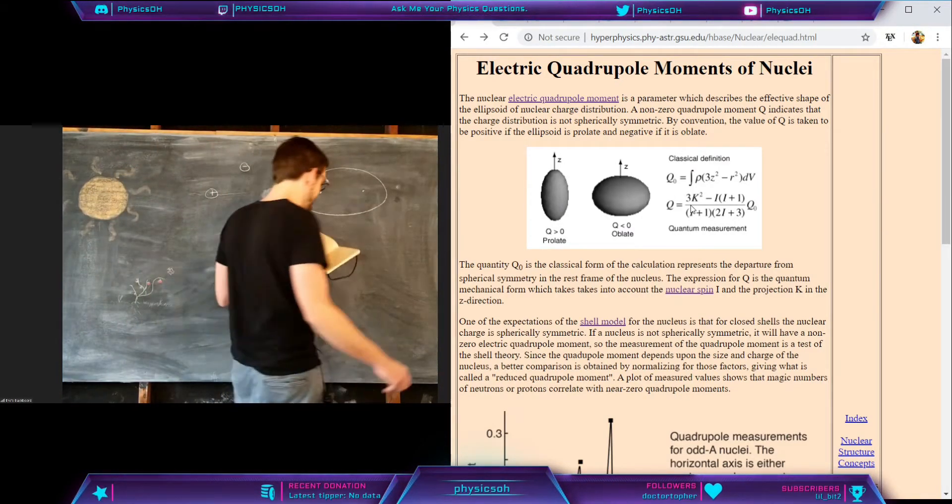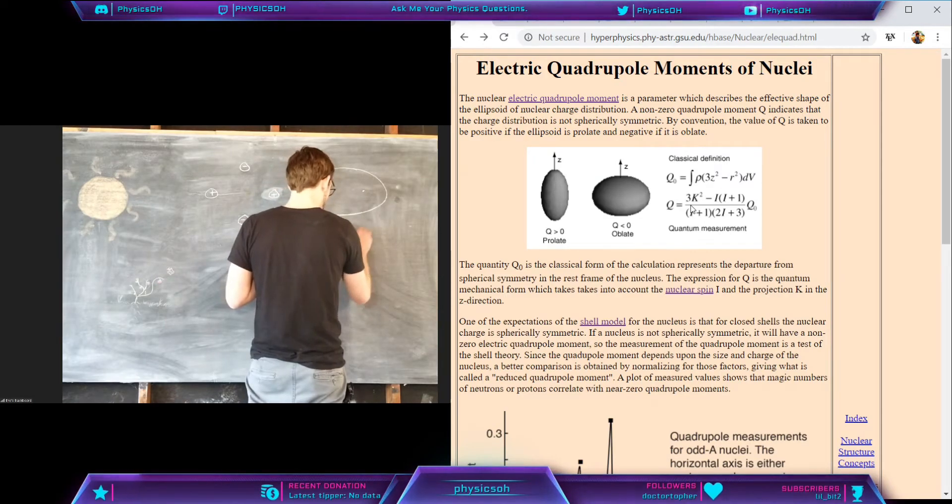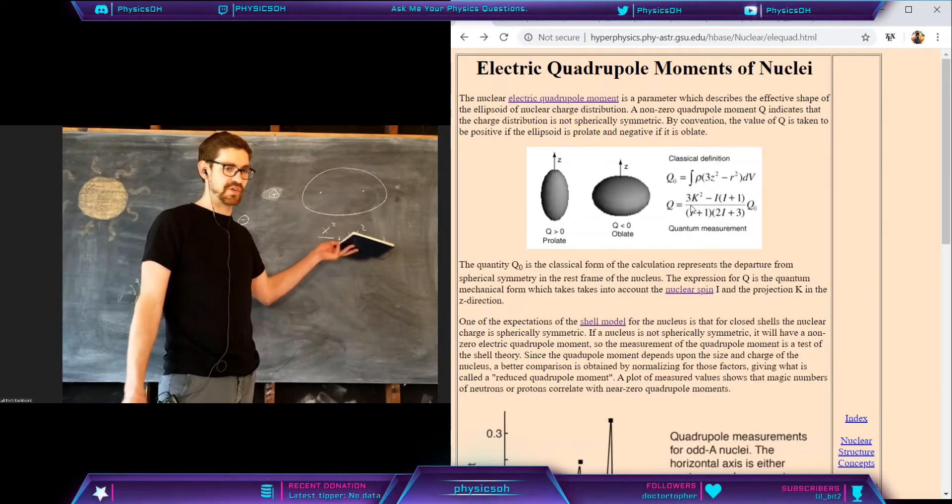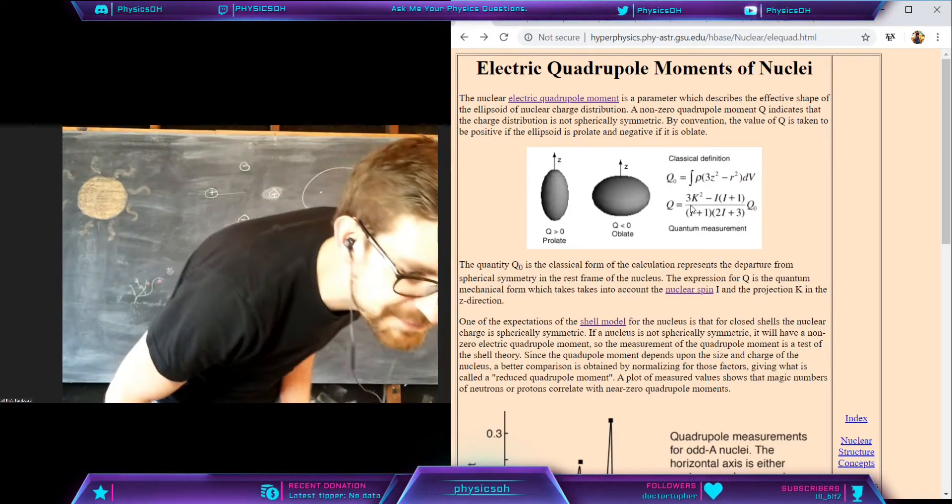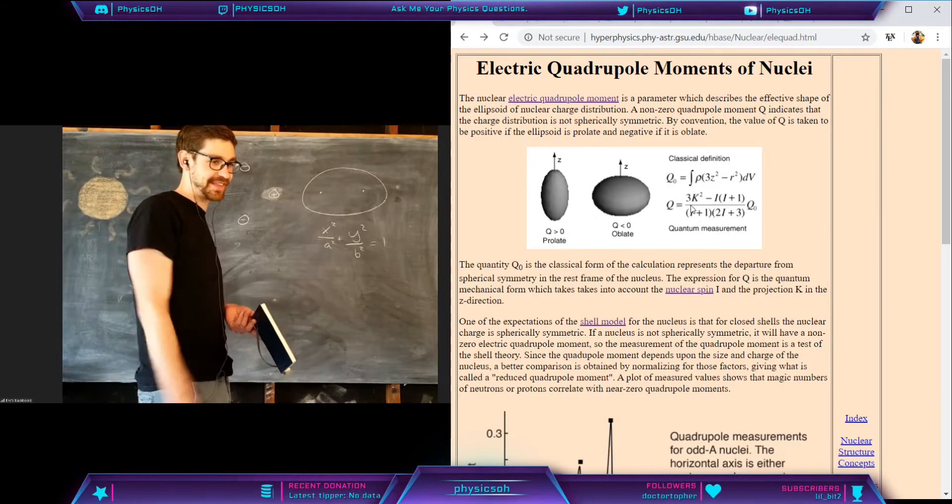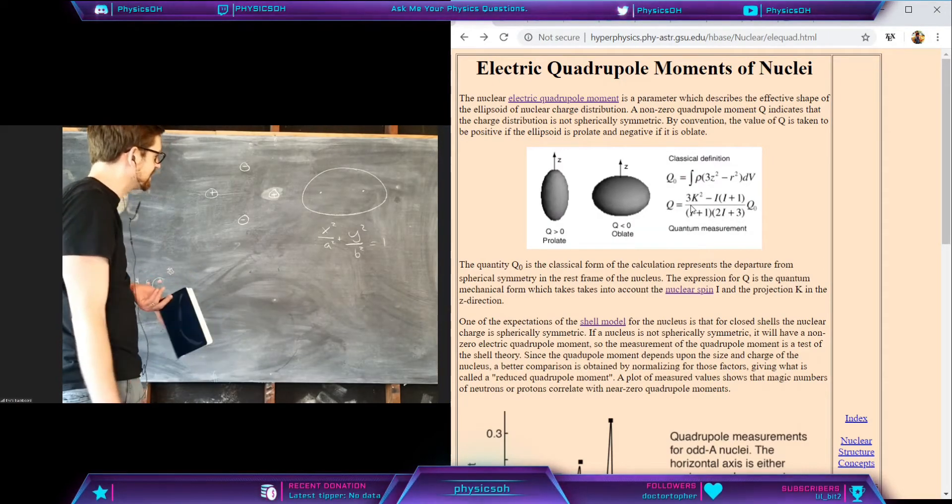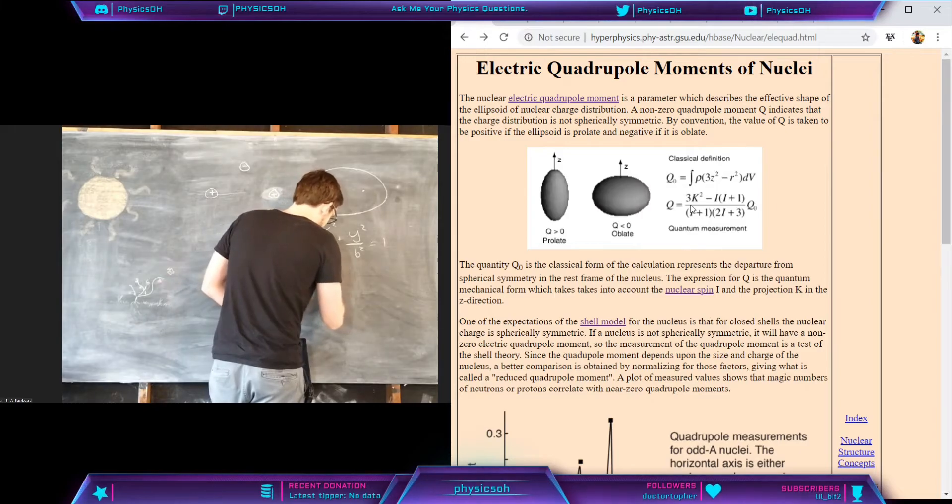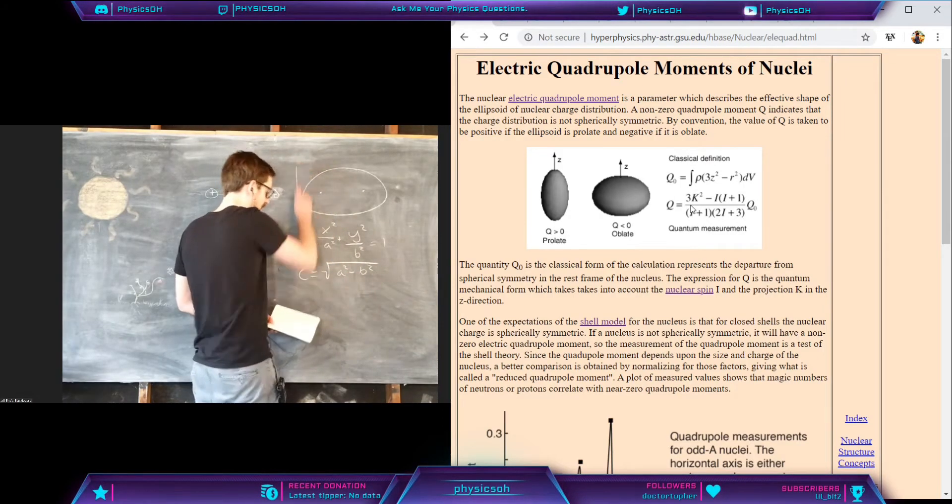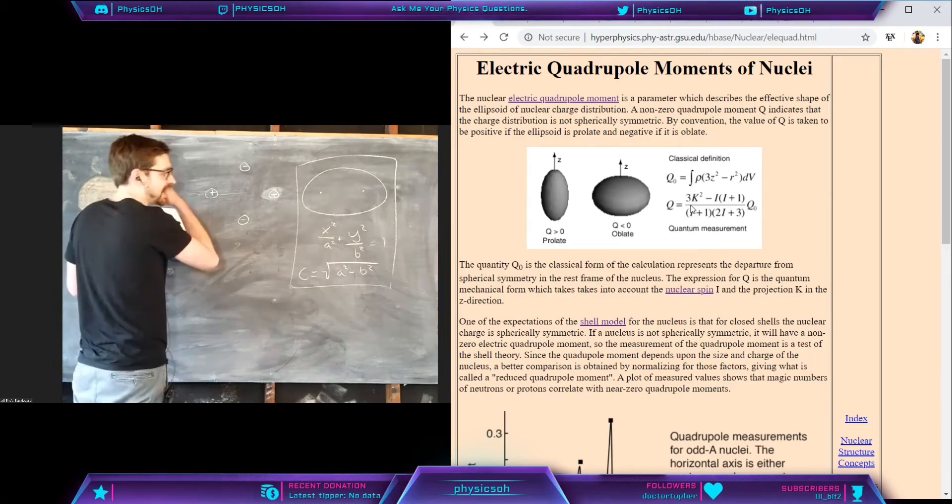The general equation looks like this: x squared over a squared plus y squared over b squared equals one for two dimensions. The three dimensional one, you just add z squared over b squared. The foci, c is equal to the square root of a squared minus b squared. This is your general elliptical surface object.